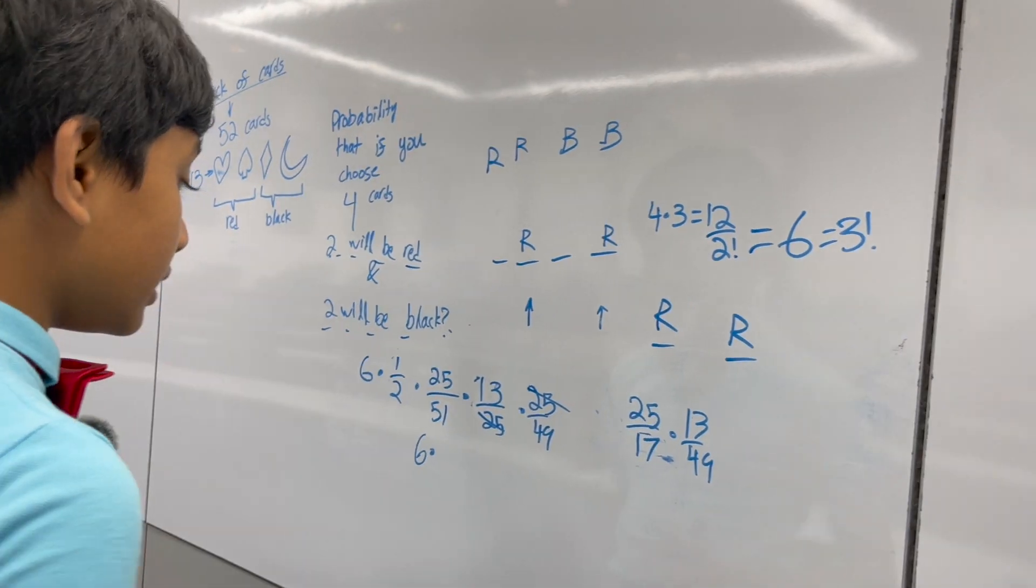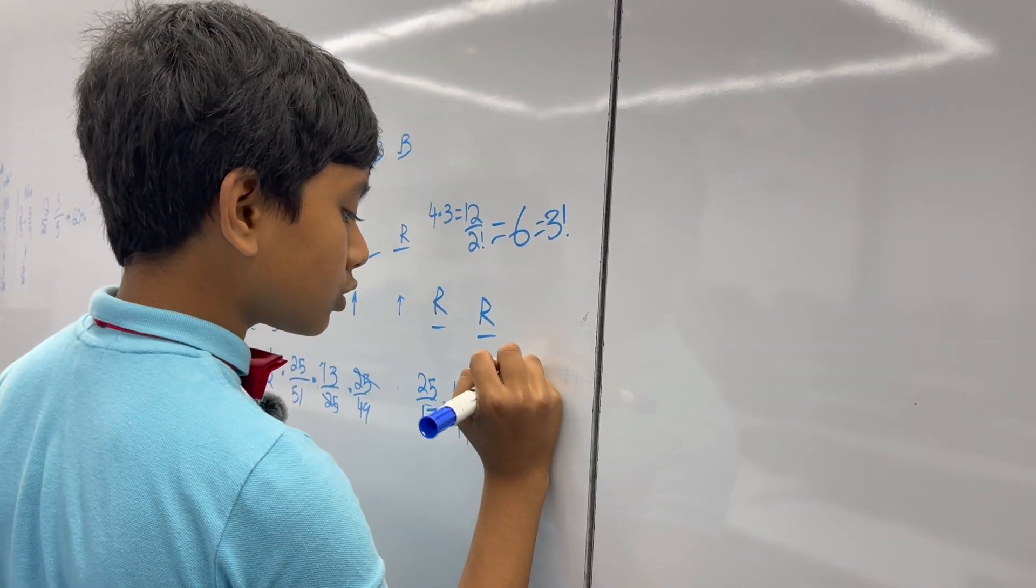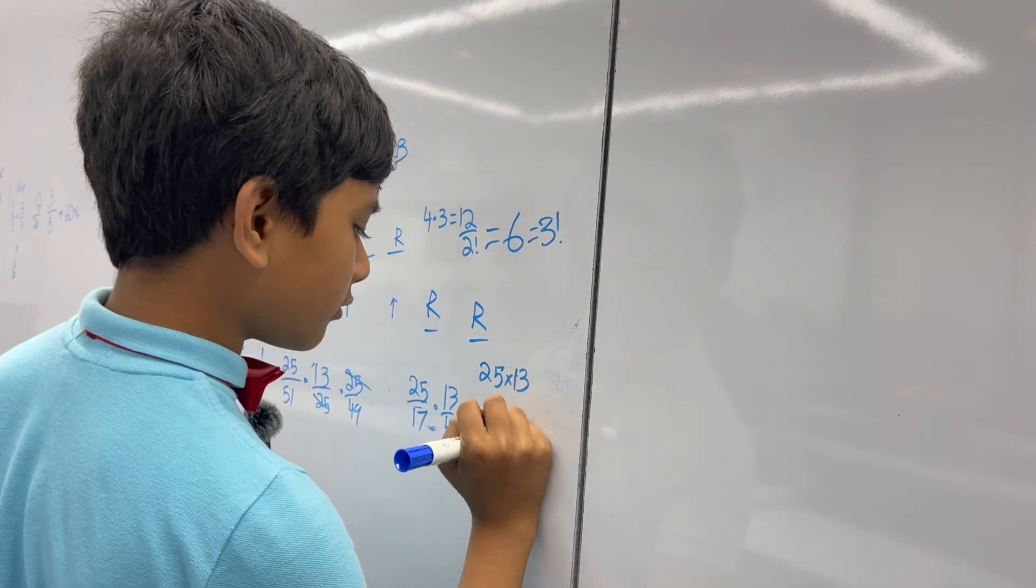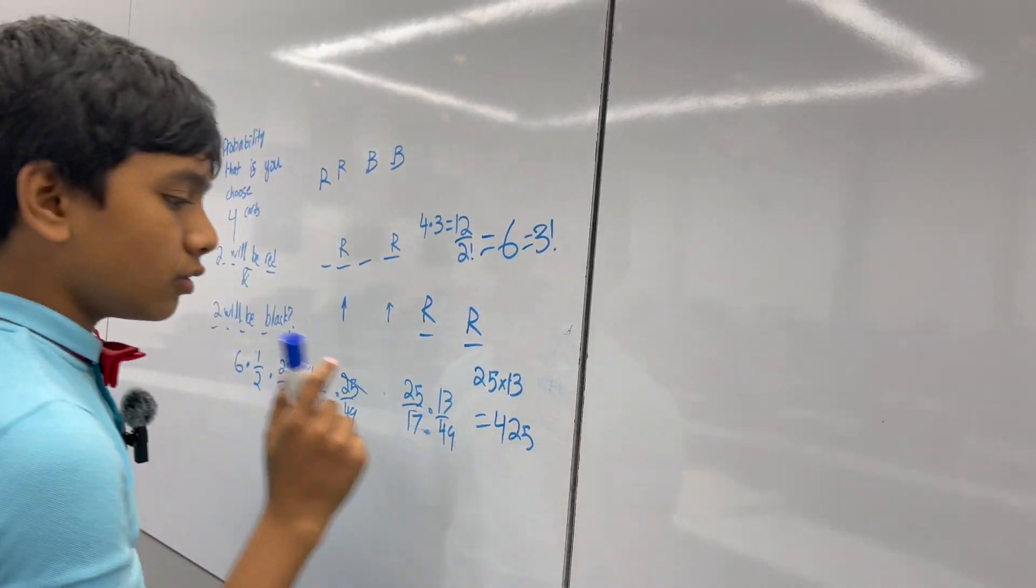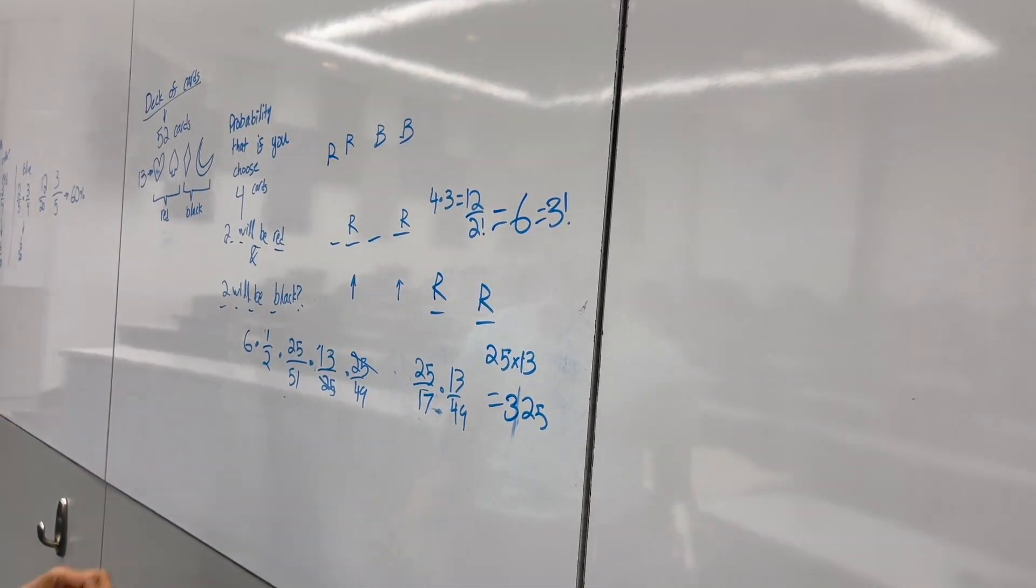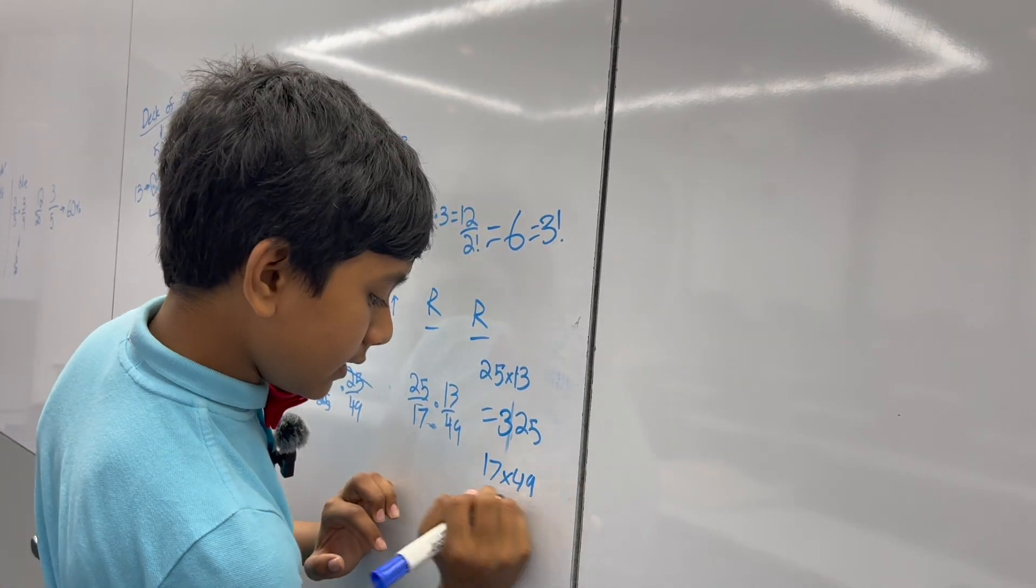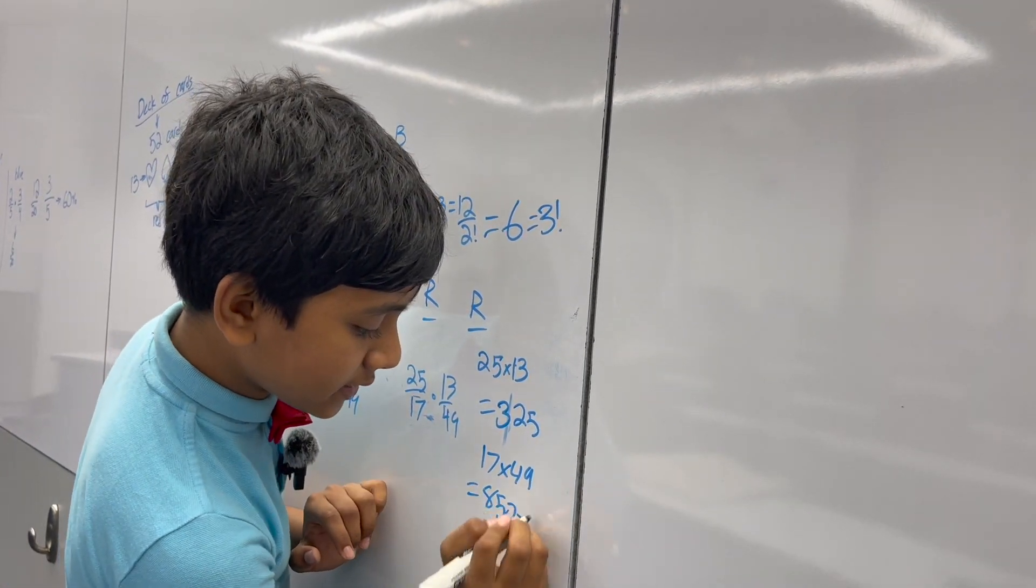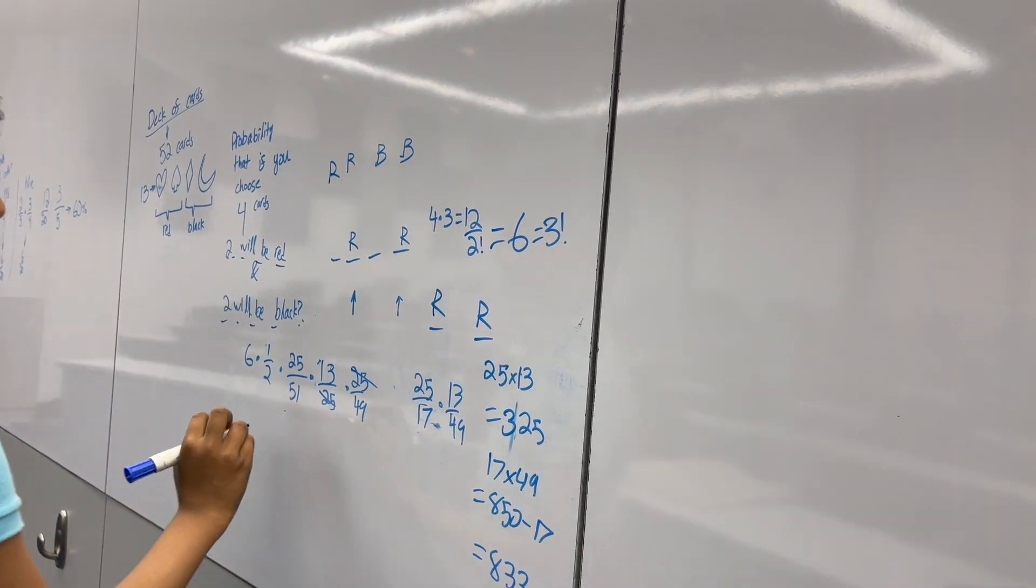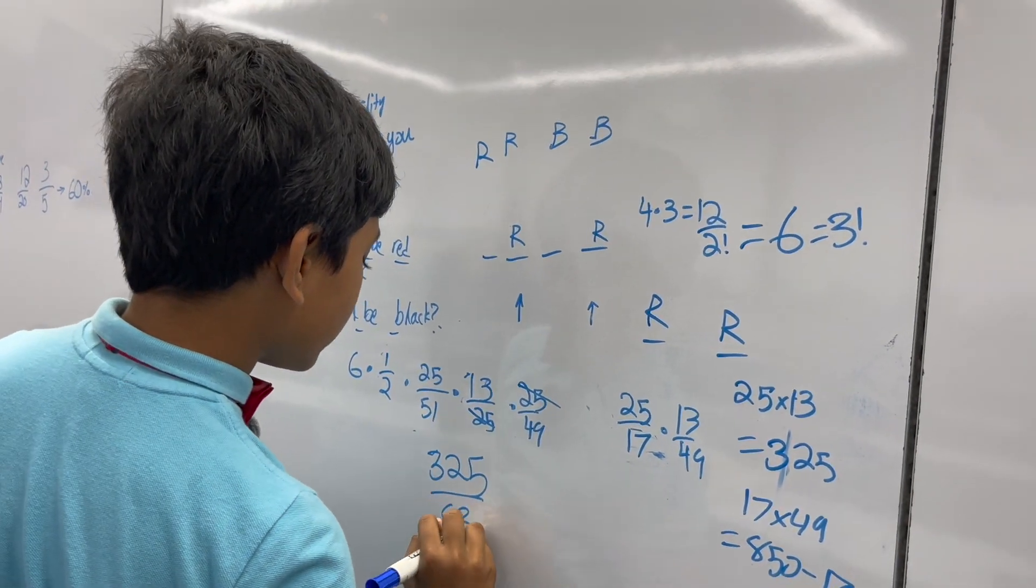That seems a little bit more manageable. So, 25 times 13 is very obviously going to be equal to 425. Or am I, no, it's 325, sorry. And then, a 17 times 49 is going to be equal to 850 minus 17, also known as 833. So, that means that there is a 325 out of 833 chance.